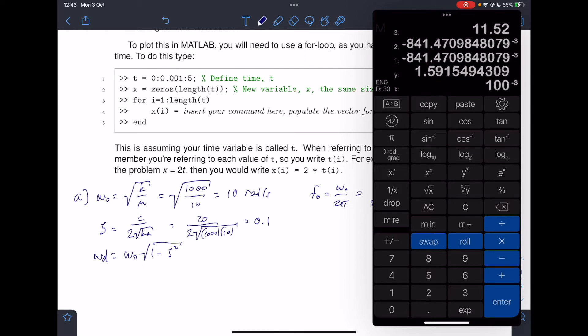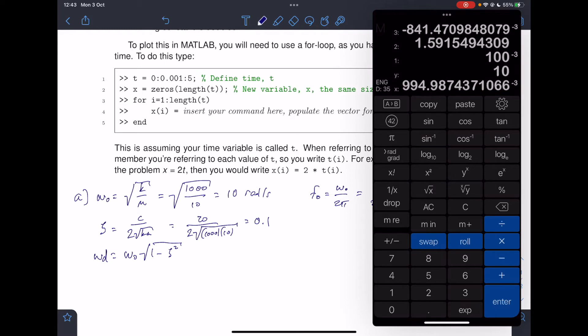And so if I've got 10 times the square root of 1 minus 0.01 squared, subtract that, square root of that, multiply by 10, we get 9.995 radians per second.